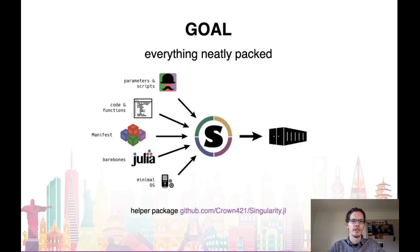Given our initial scenarios, we now would like to combine everything into a single shareable container that we can then send to another device, a computing cluster, or to other people. Everything here should include the minimal OS, Julia, all packages from the manifest, and of course our own code and scripts. To facilitate this, I've created a small helper package called Singularity.jl.